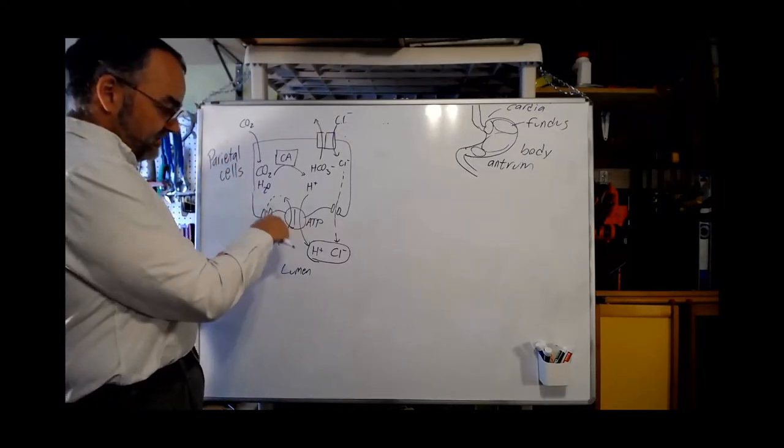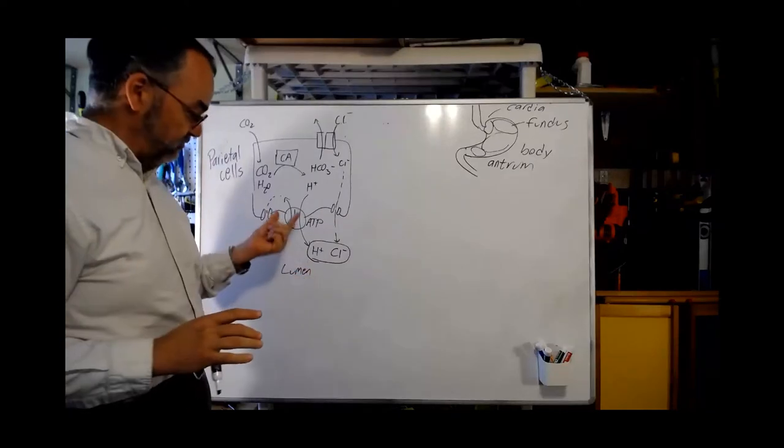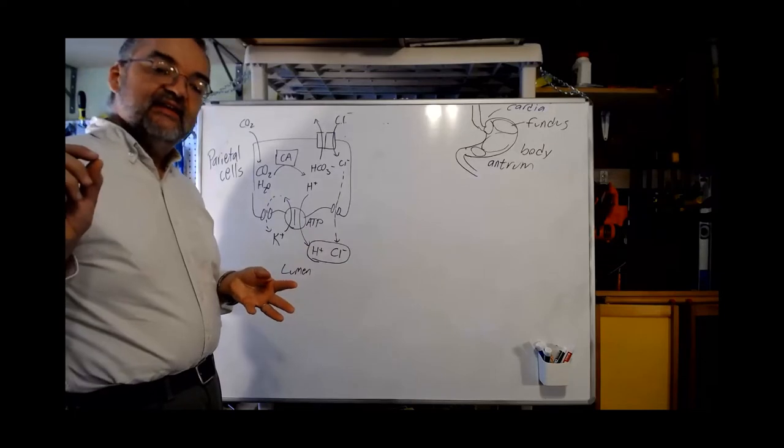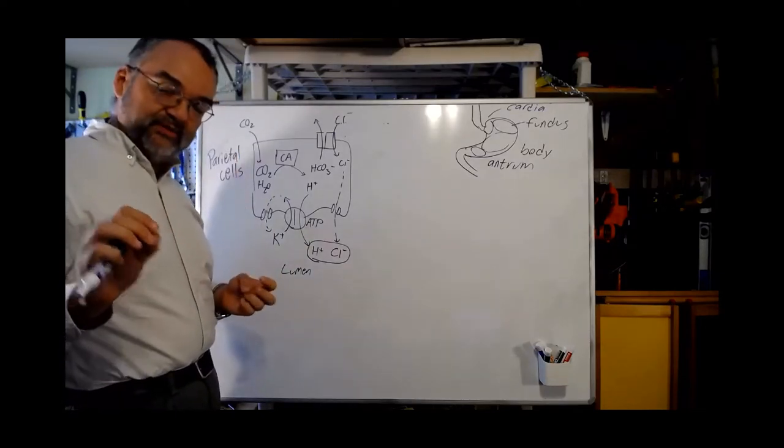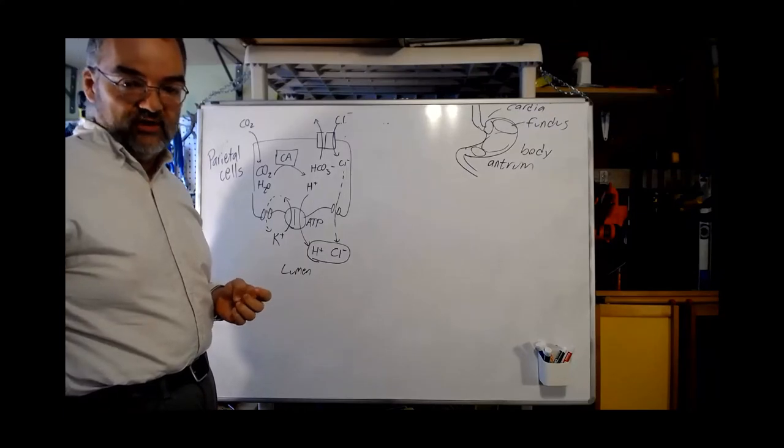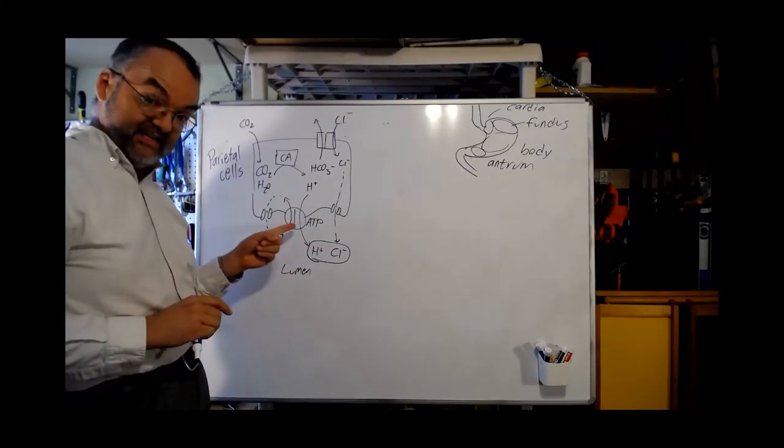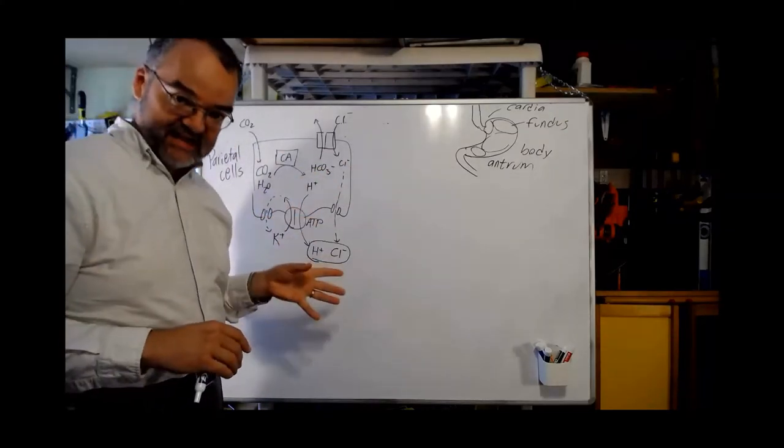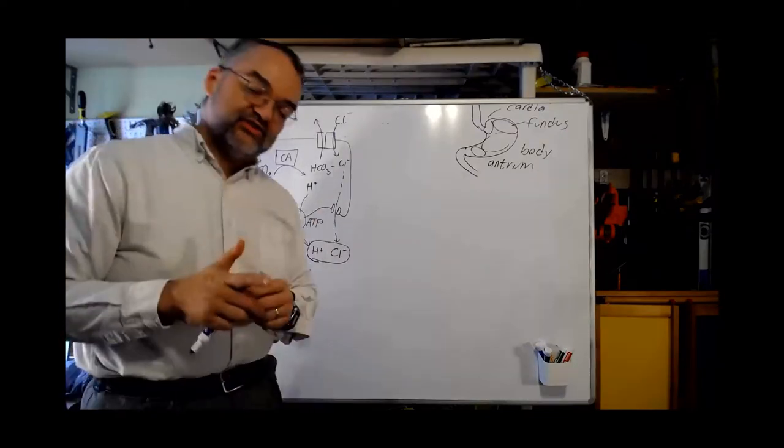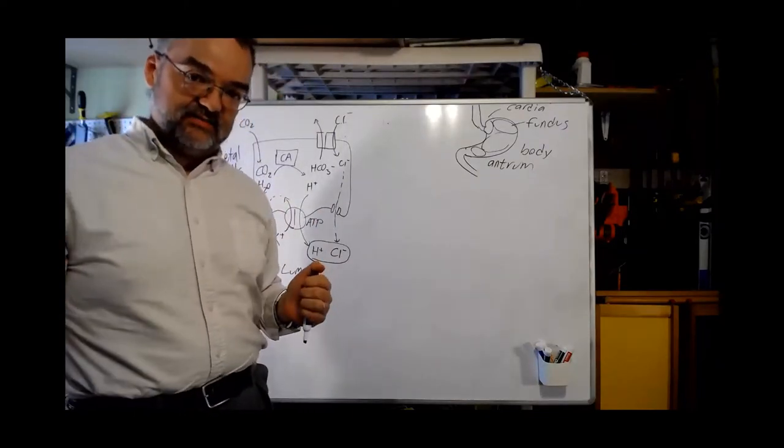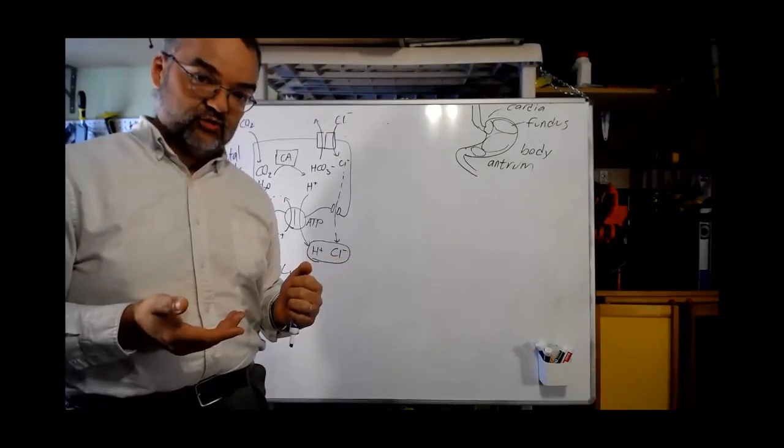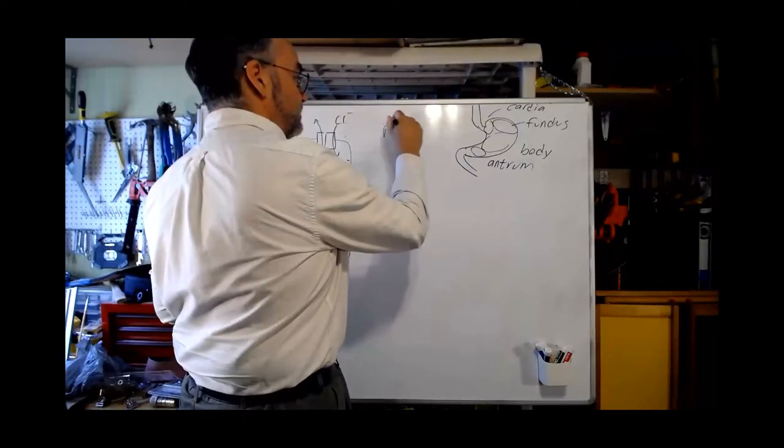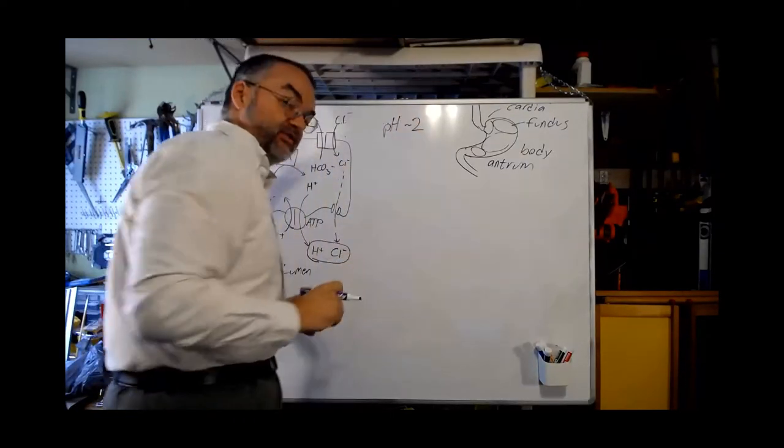Now, this proton mover, this proton potassium active exchange pump, sometimes called the proton pump, is a target of some pharmaceuticals. If you've heard of people being prescribed proton pump inhibitors for reflux, that's the proton pump that's getting inhibited. So that's how parietal cells produce acid in this gastric phase. When encouraged to do so by gastrin and histamine and some other things, they can pump quite a bit of hydrochloric acid into the stomach. They'll take this stomach and make the pH down around 2 or so, which is pretty strongly acidic.